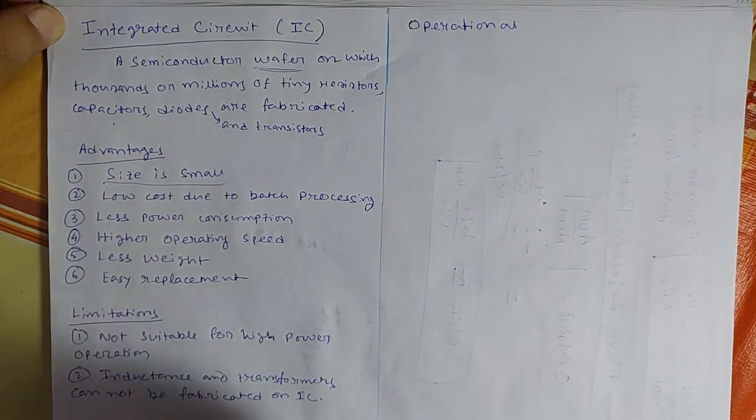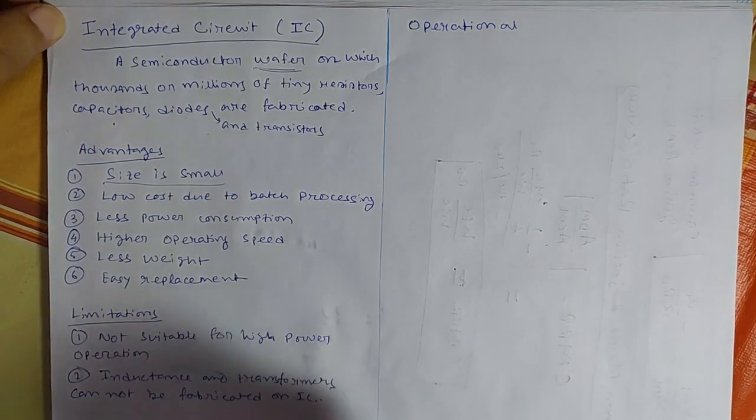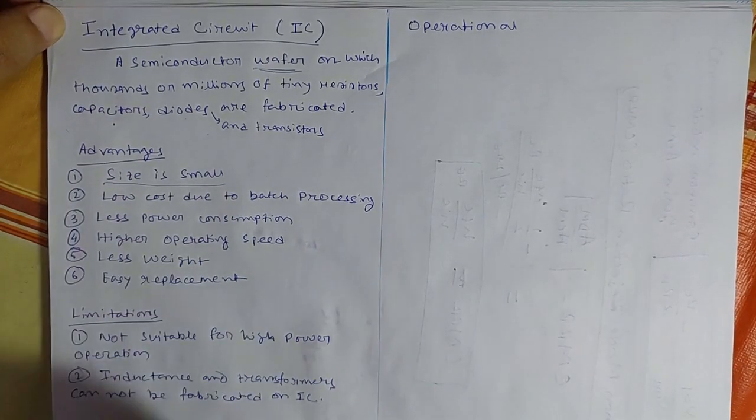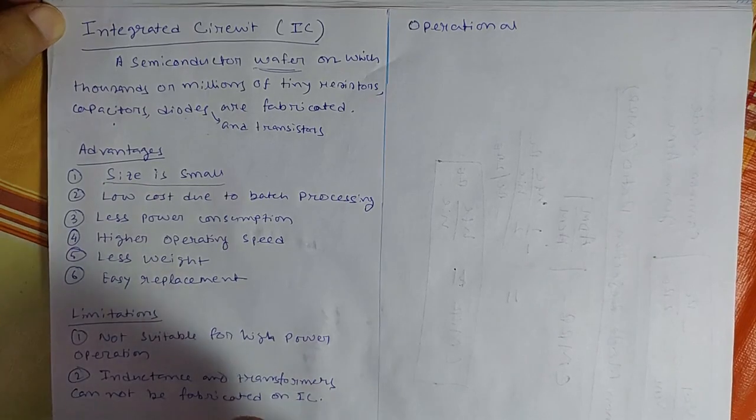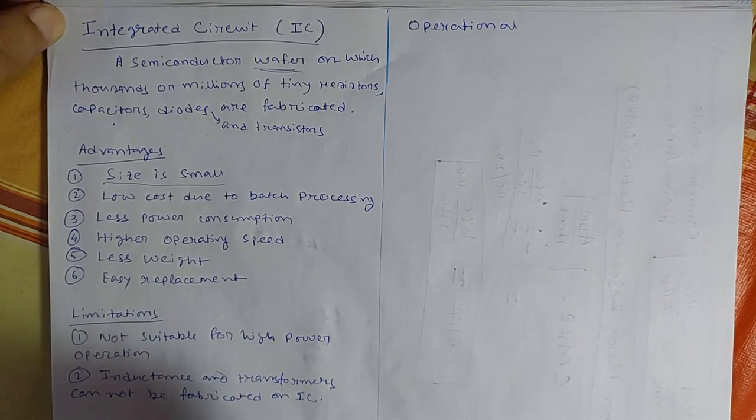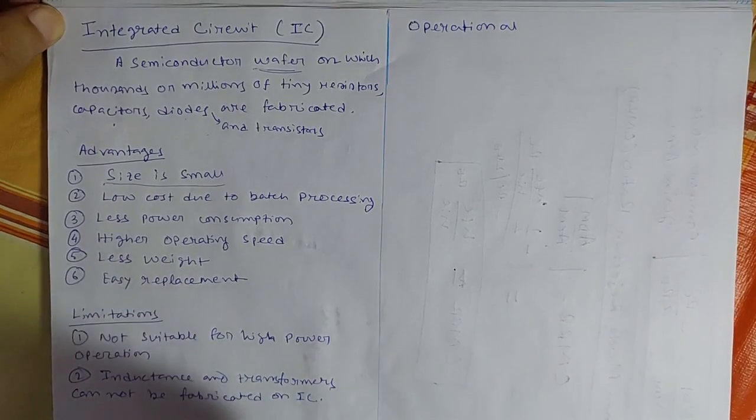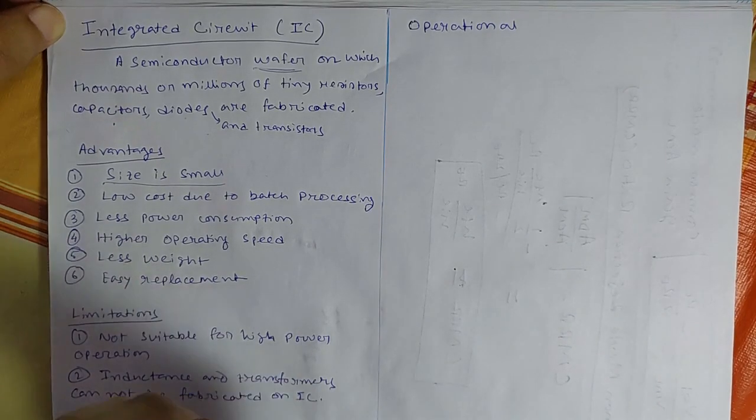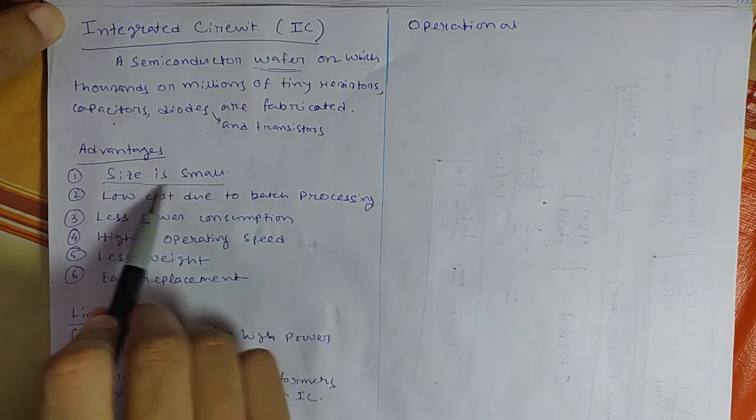Now there are several advantages behind this. First one is size. Size of the IC is very small. It depends on the technology used. So it may be within a micrometer range, maybe a few micrometers, square micrometers is the area of the IC.